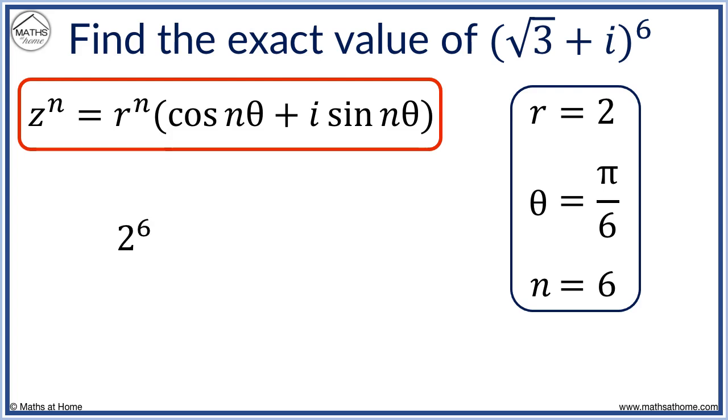We obtain 2 to the power of 6, n times theta equals pi, so we obtain cos pi plus i sine pi. 2 to the power of 6 equals 64, cos pi equals minus 1, and sine pi equals 0. Therefore, our answer to root 3 plus i to the power of 6 equals minus 64.